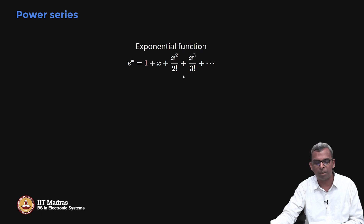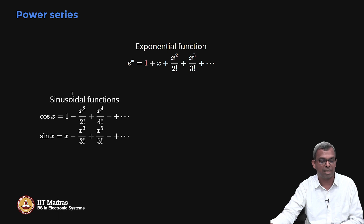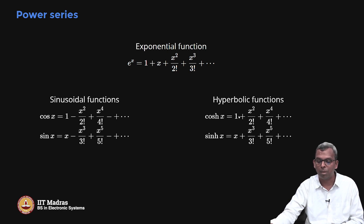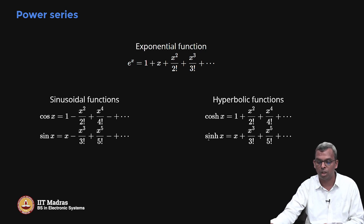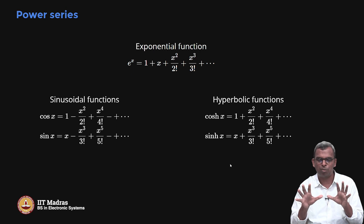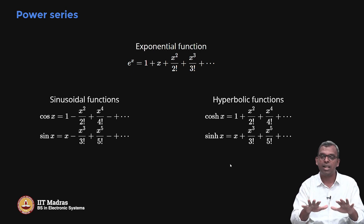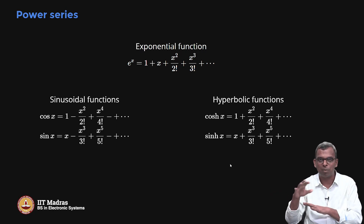Power series also have a very similar form. The exponential function is e^x = 1 + x + x²/2! + ⋯. Sinusoidal functions: cos x = 1 − x²/2! + x⁴/4! − ⋯, sin x = x − x³/3! + ⋯. For the hyperbolic: cosh x = 1 + x²/2! + x⁴/4! + ⋯, sinh x = x + x³/3! + x⁵/5! + ⋯. We will see later that these functions form important solutions to some systems and play a very vital role.